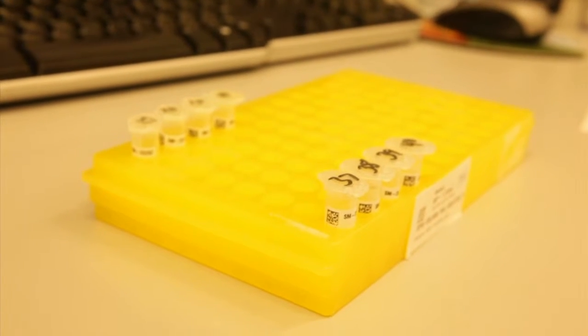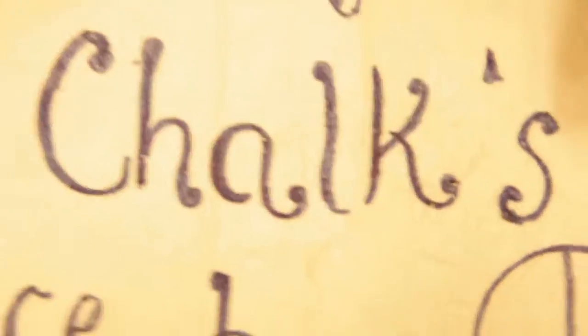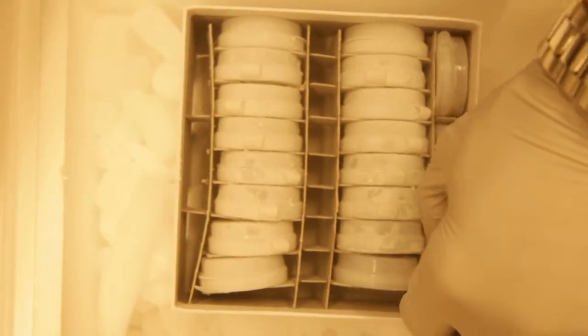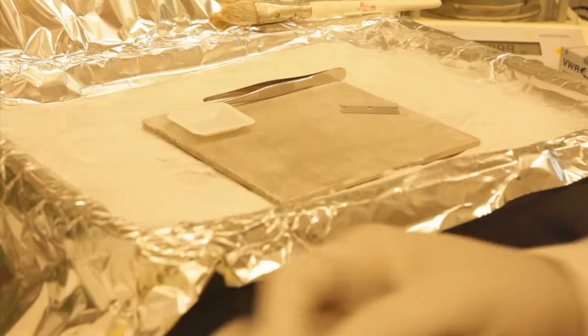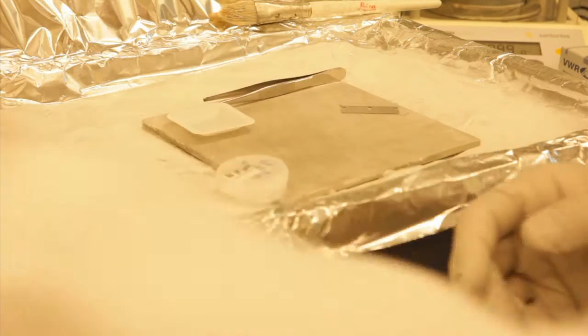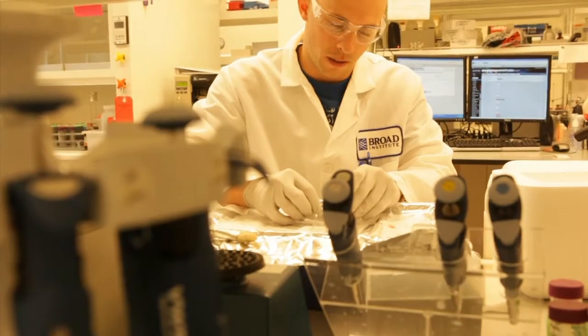Clint and Kara keep the samples on dry ice to keep the DNA from breaking down. They cut tiny pieces of tissue and weigh each one.